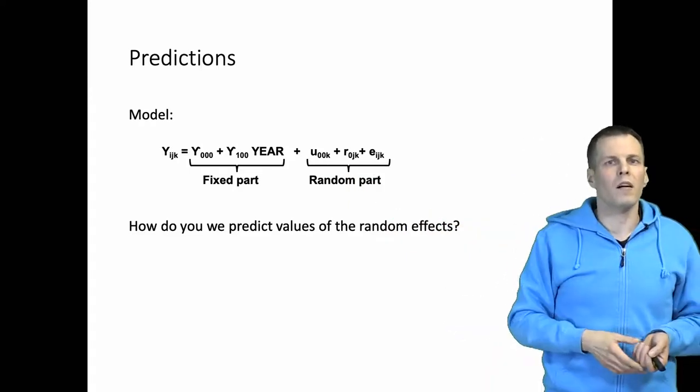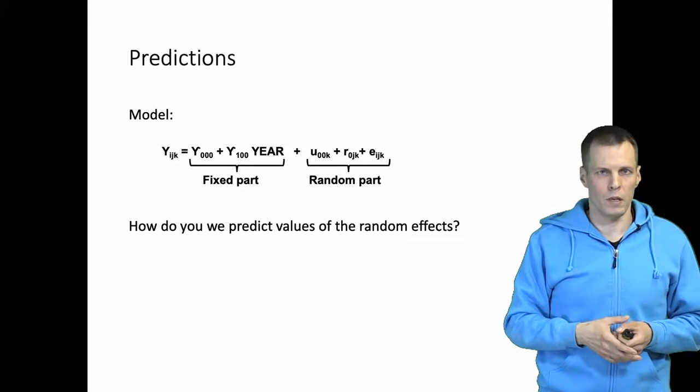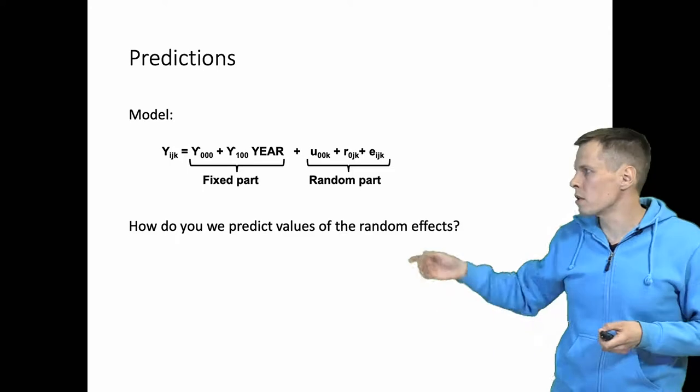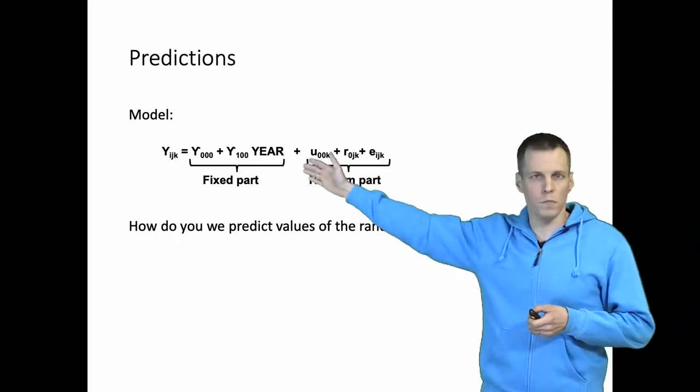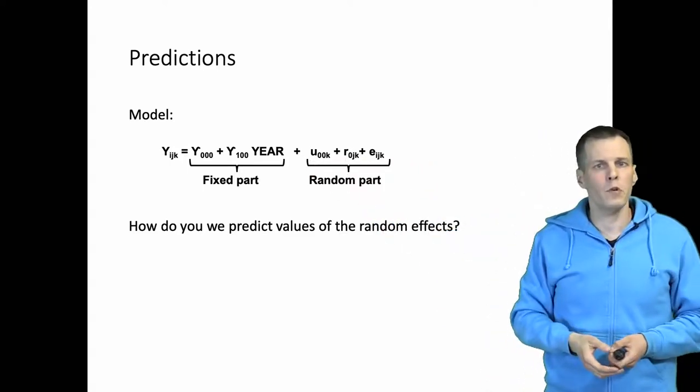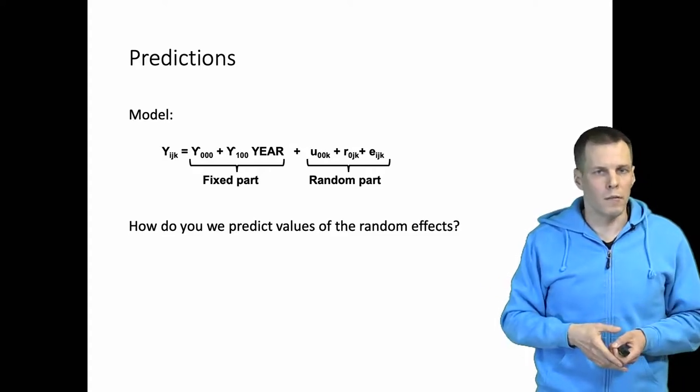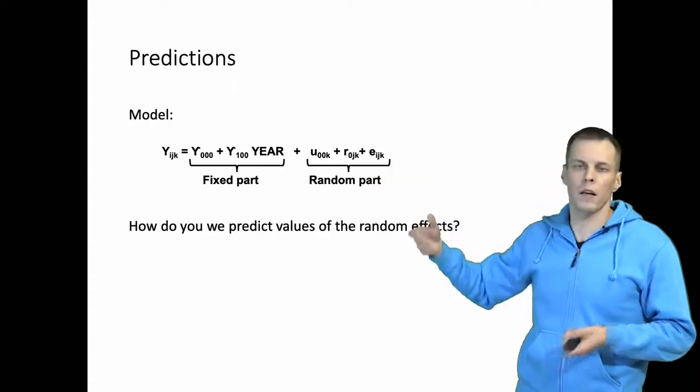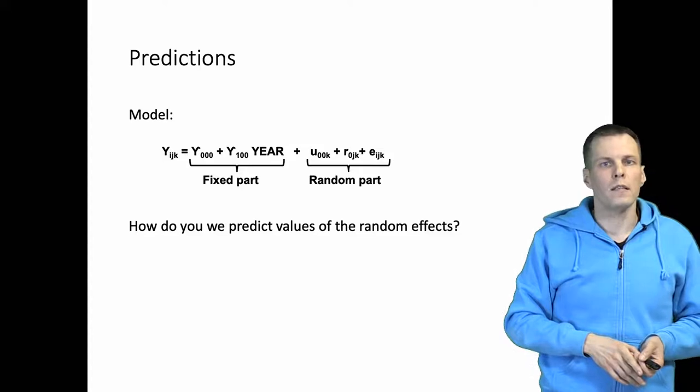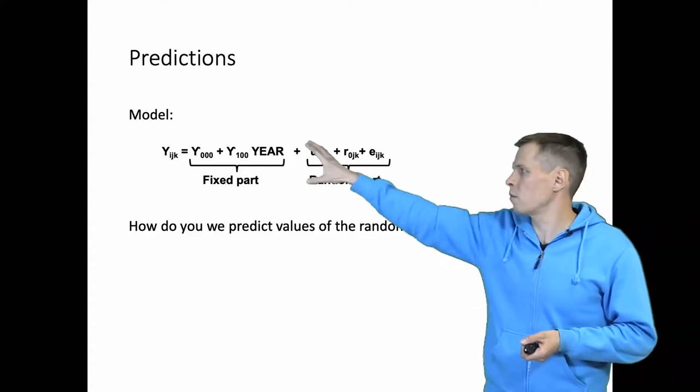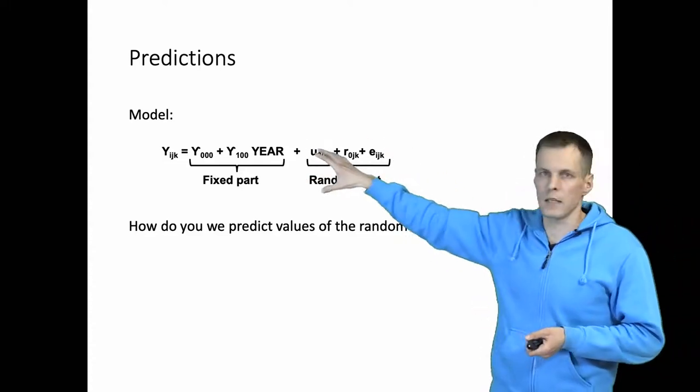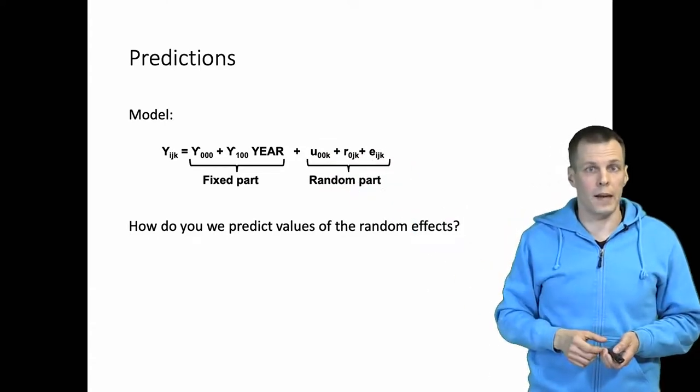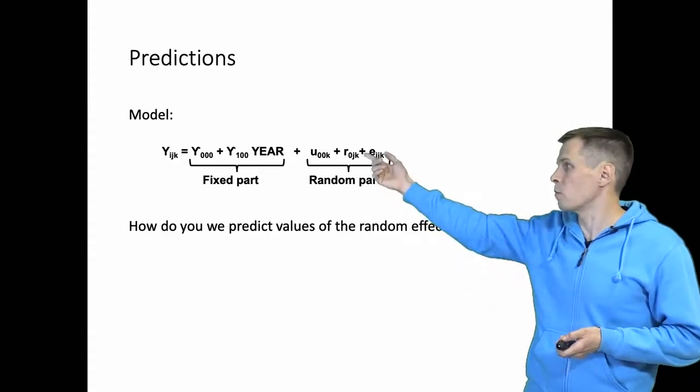Well there are two main techniques that we normally apply. We know that in the population based on the model assumptions the means of all these are zeros. So a simple strategy to estimate what is the random effect of let's say R_0JK, let's call that the firm random effect, is simply to take the residuals that the random part is estimated from and take the mean of the residuals for a company and that is the estimated value for the random effect for that company.